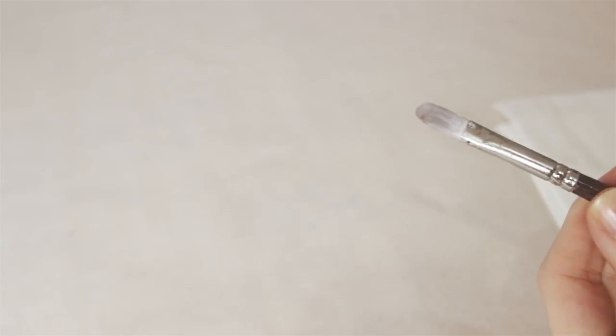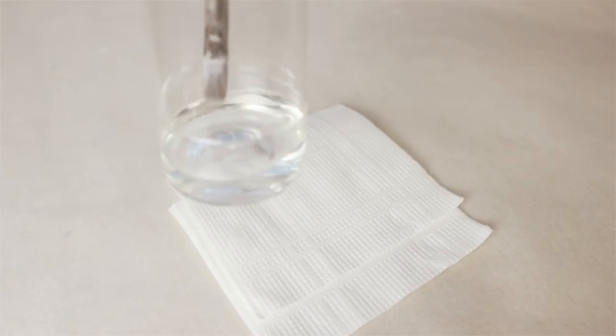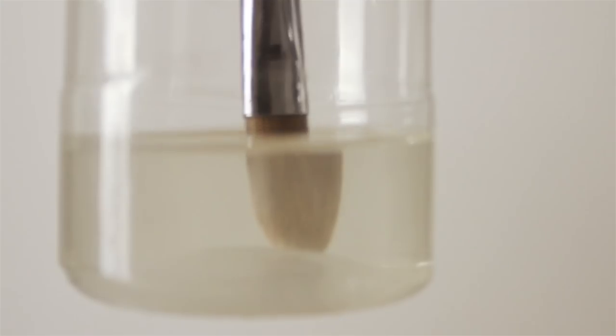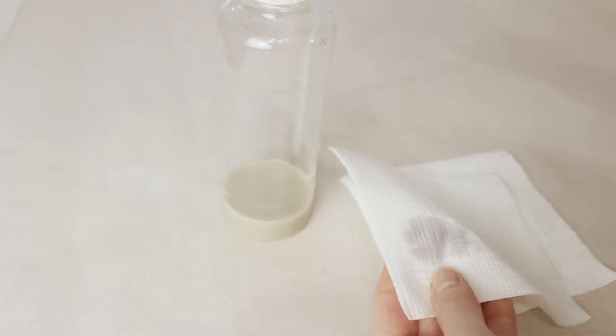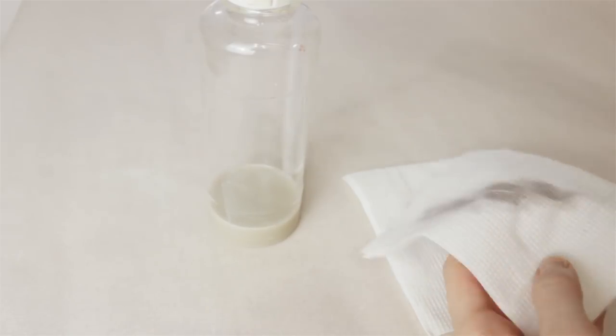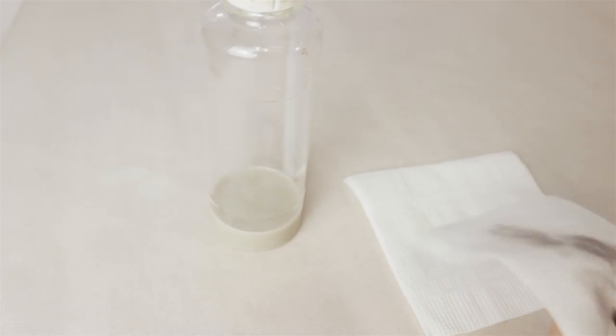As a first step, I rinse the brush I want to clean in solvent. I use odorless mineral spirits and wipe it off with a paper towel. You might want to repeat it a couple of times until the brush doesn't leave stains on the paper towel anymore.